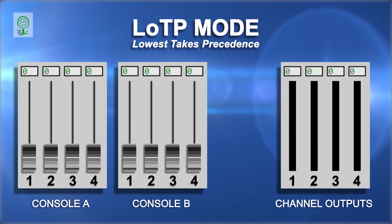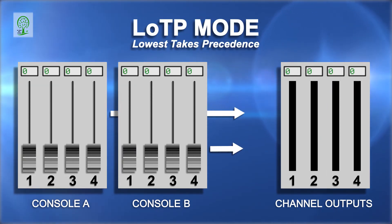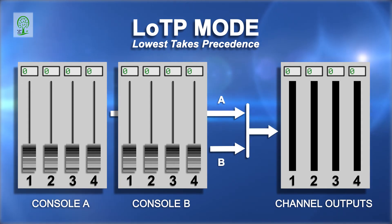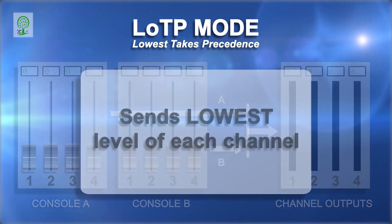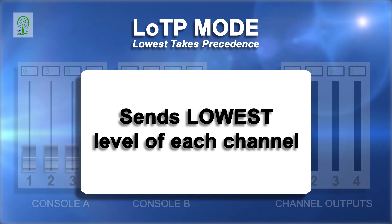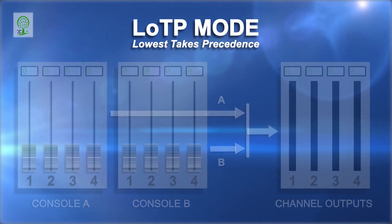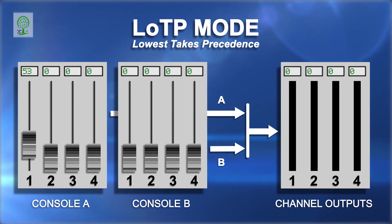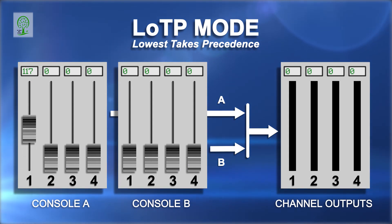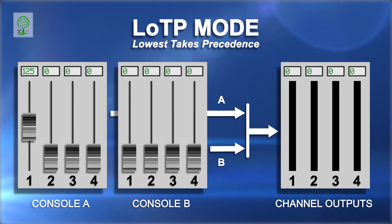The LOTP, or lowest takes precedence mode, will merge two universes into one universe by sending the lowest level of each individual channel. In the LOTP mode, if input A, channel 1, increases from 0 to a level of 125, and input B is 0,